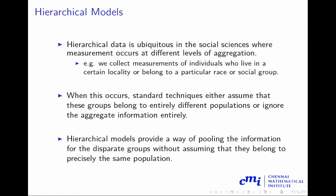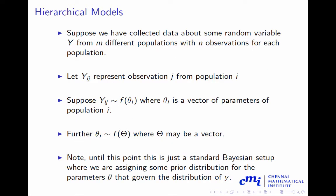Suppose we have collected data about some random variable y from m different populations with n observations for each population. y_ij represents observation j from population i. Suppose y_ij follows f(theta_i), where theta_i is a vector of parameters from population i. Then you are assuming theta_i follows a particular distribution f(theta).